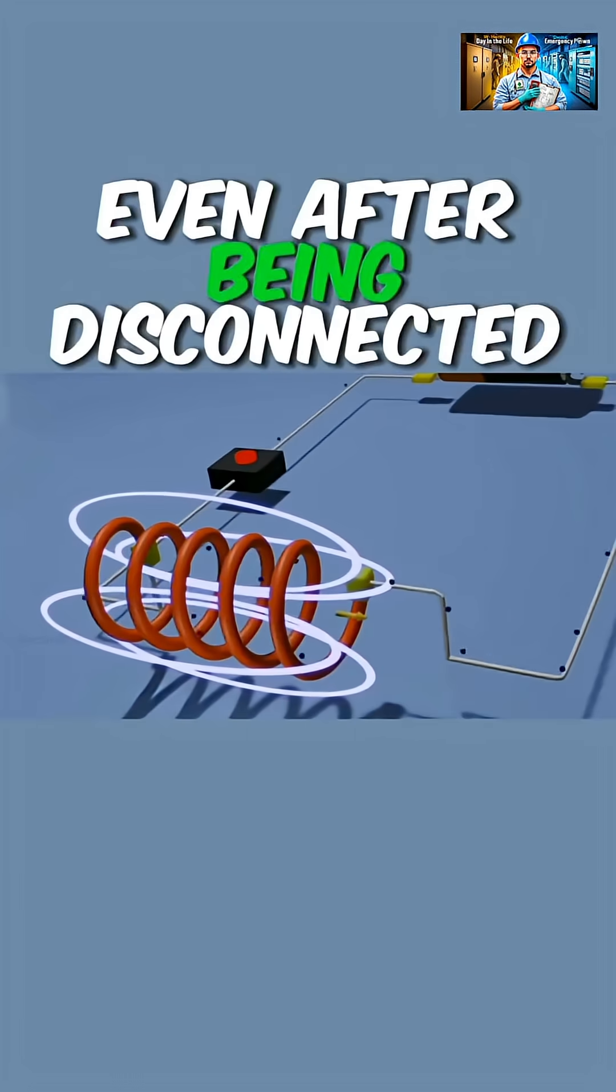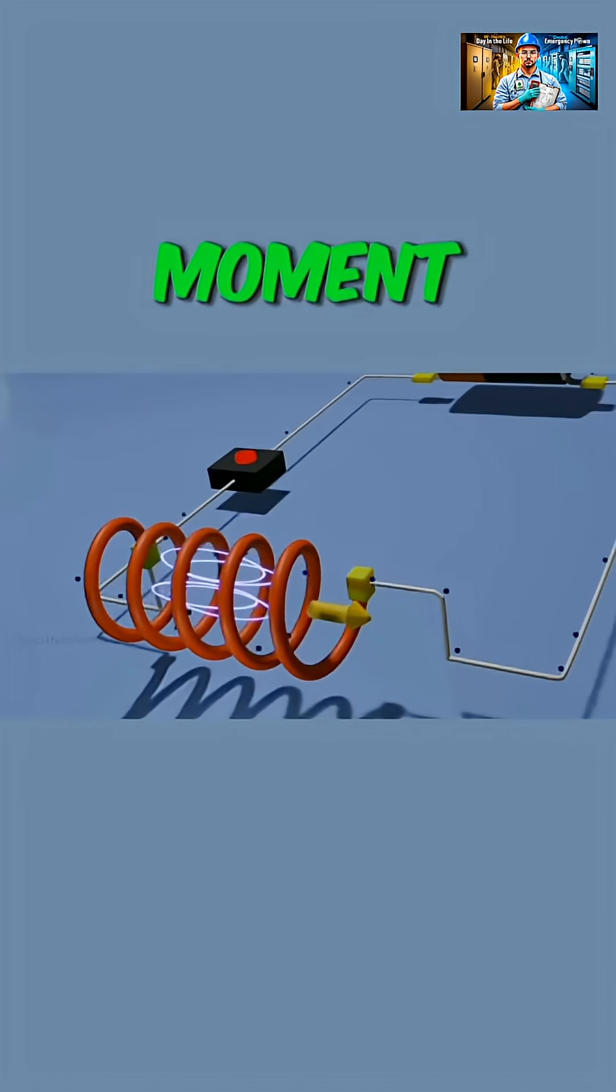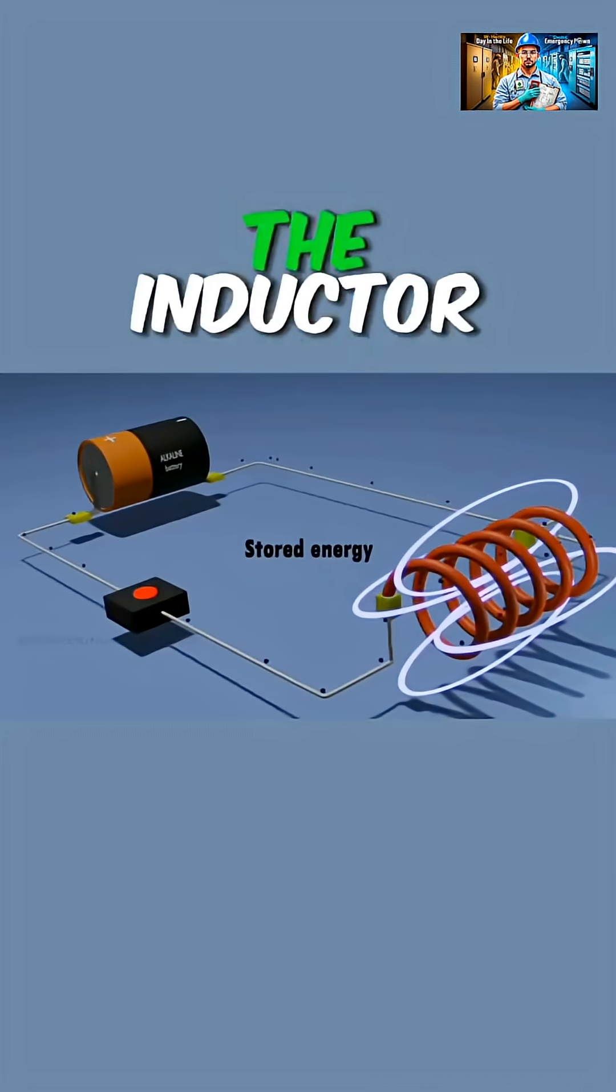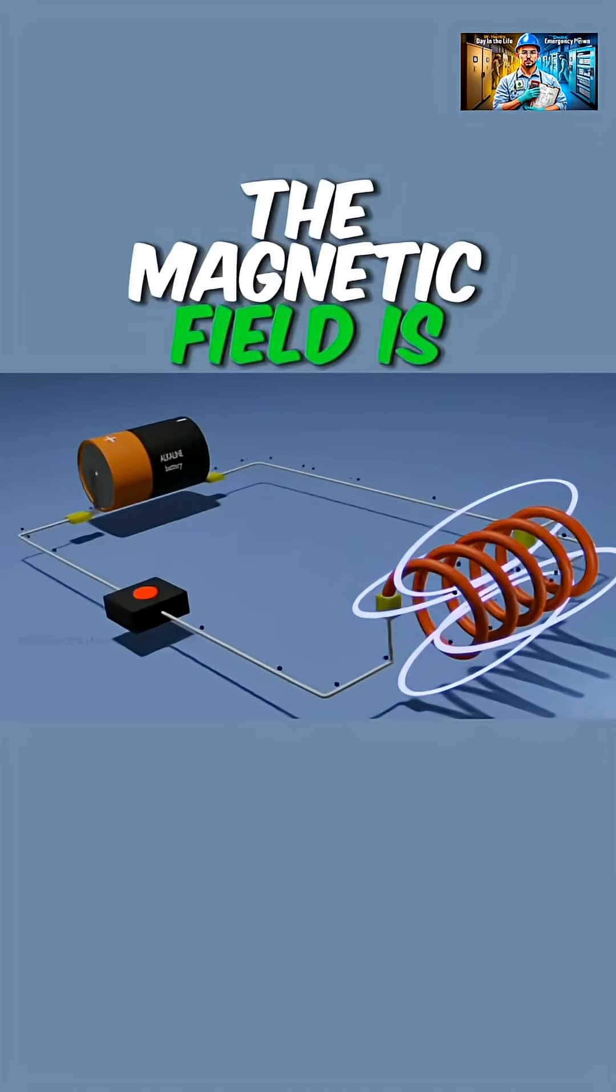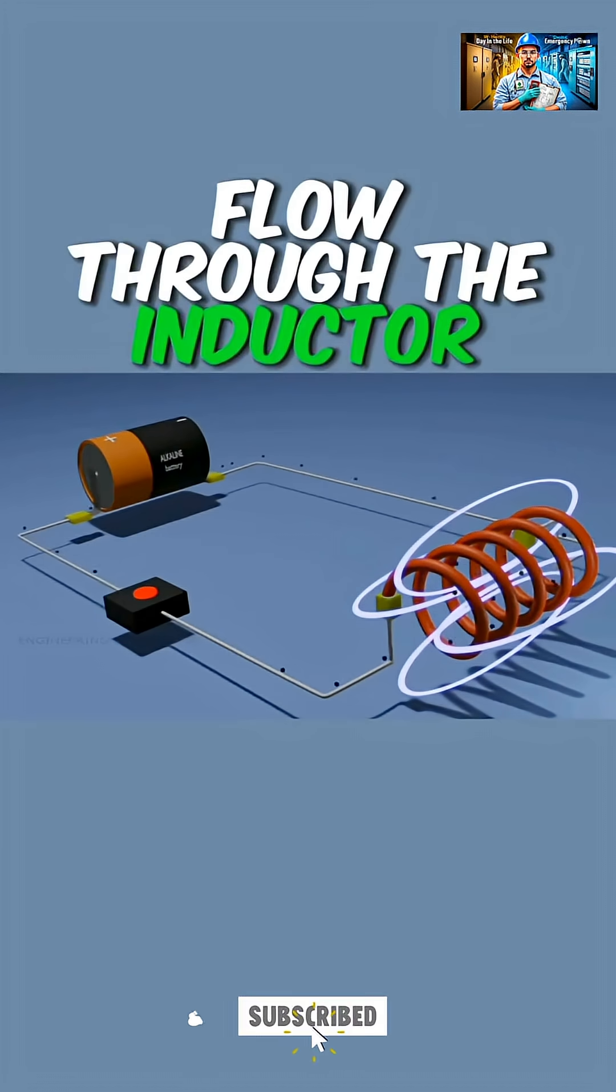Even after being disconnected from the voltage source, the inductor has some current flow for a brief moment. This is due to the energy which was stored up in the magnetic field of the inductor. The magnetic field is self-sustaining, as long as there is current flow through the inductor.